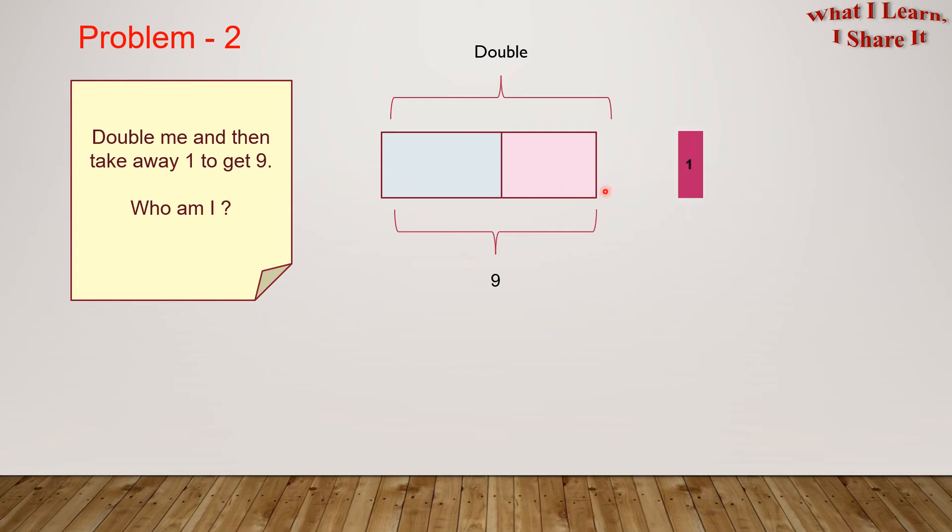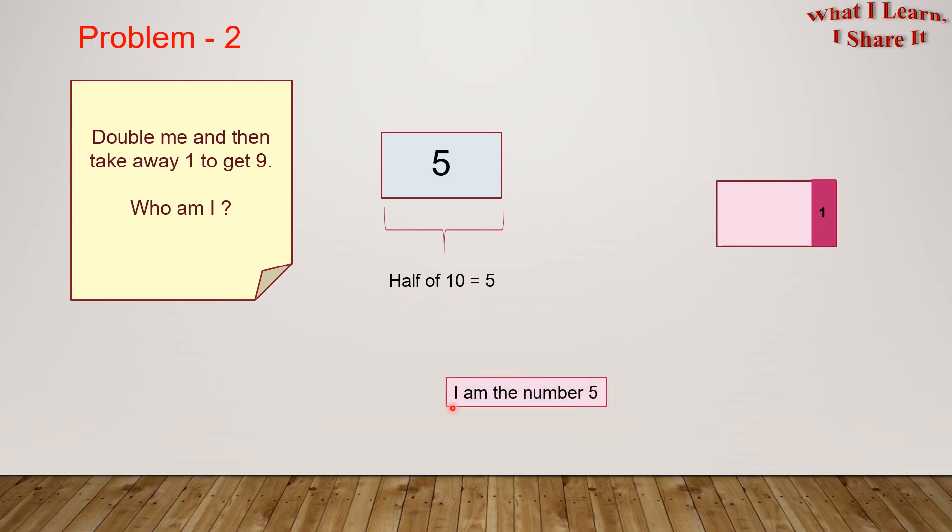This is 9. Let's try the working backwards strategy and add the 1 we removed. Here goes 1 back with the other 2 boxes. And total, it becomes 9 plus 1 equals 10. We could see that these 2 boxes will make a total of 10. If we remove one of these boxes, the other one will be half of 10, which equals 5. I am the number 5.